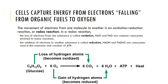The cells of the body are able to capture energy from electrons that go from organic fuels to oxygen in the process of respiration. The movement of electrons from one molecule to another is called an oxidation-reduction reaction. Redox reactions include reduction, where you have a gain of electrons, and oxidation, where you have a loss of electrons. Just like with anabolism and catabolism, oxidation and reduction reactions are typically coupled, and that's why they are called redox reactions. During cellular respiration, NAD+ and FAD+ act as coenzymes by serving as carrier molecules for hydrogen electrons.